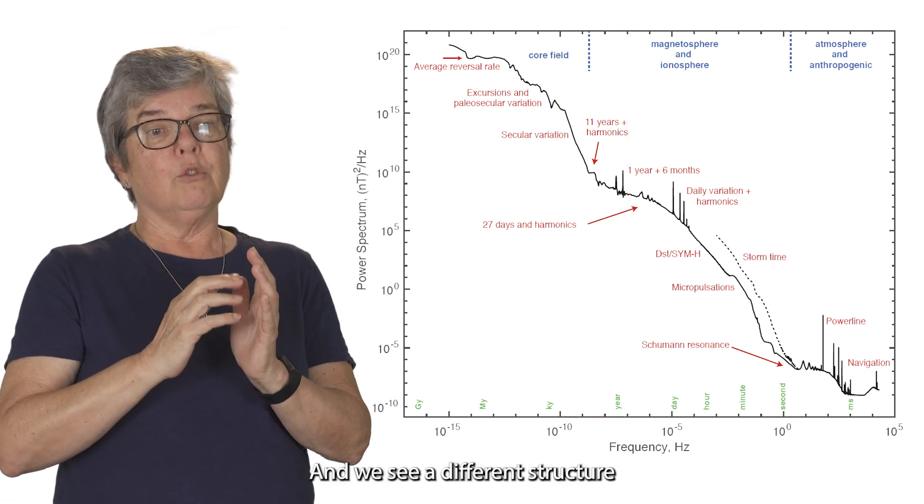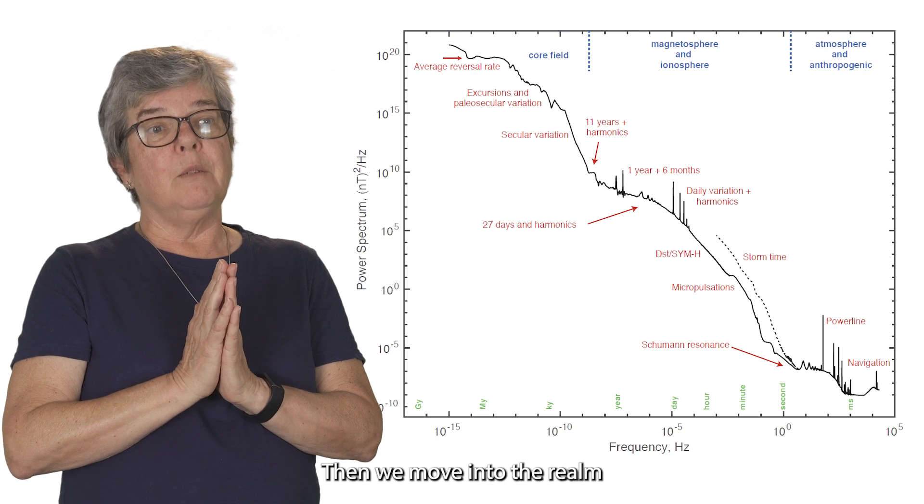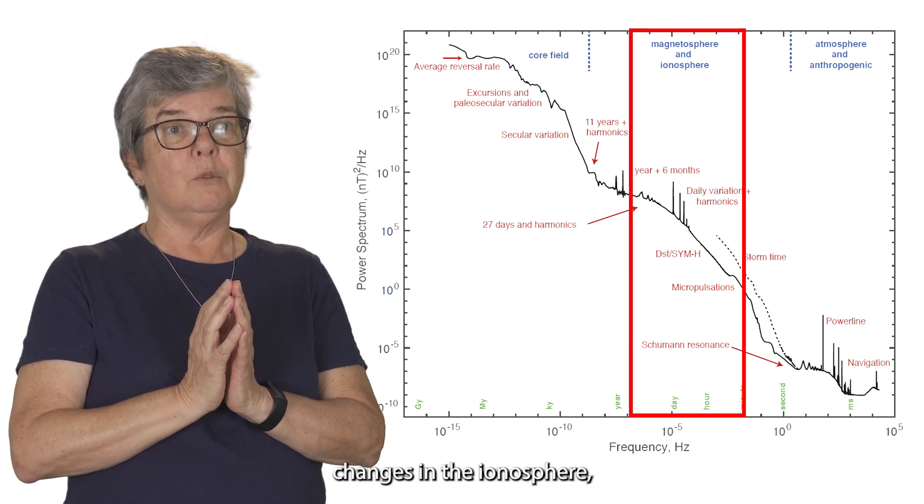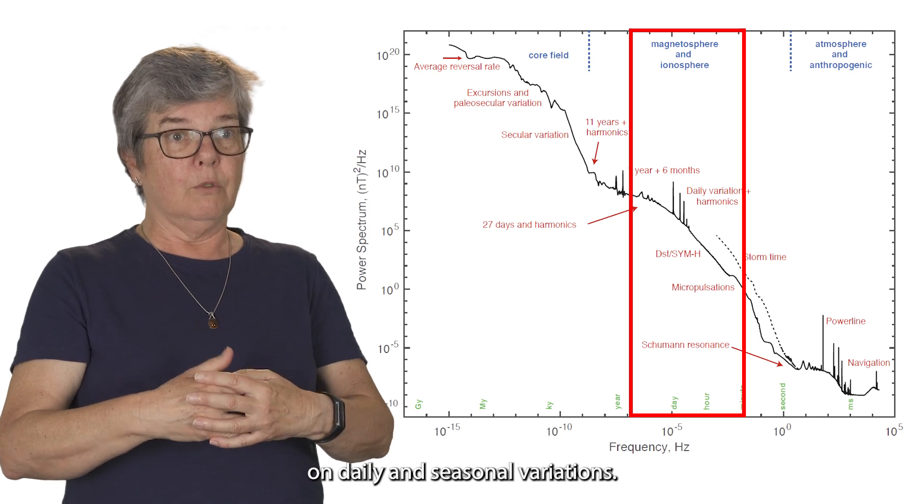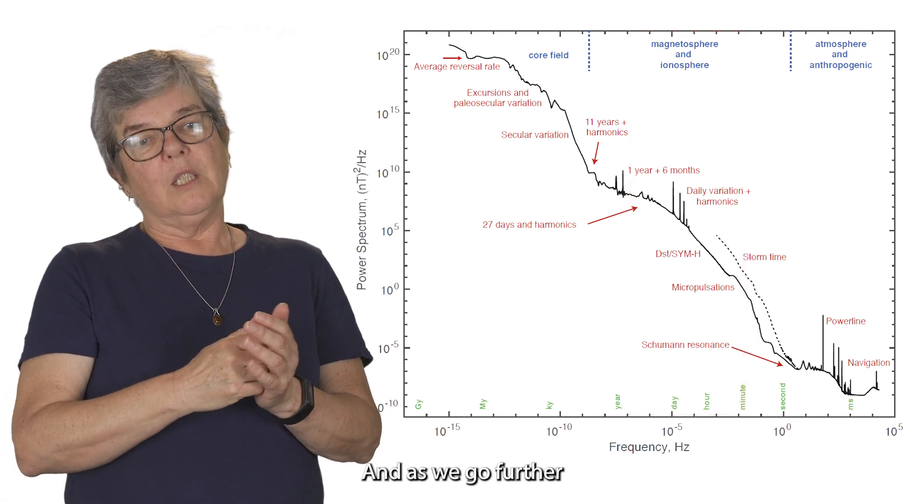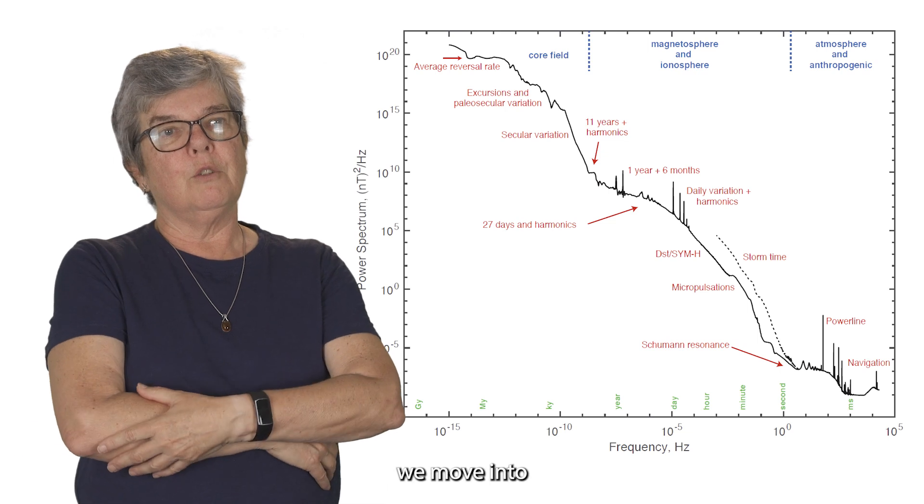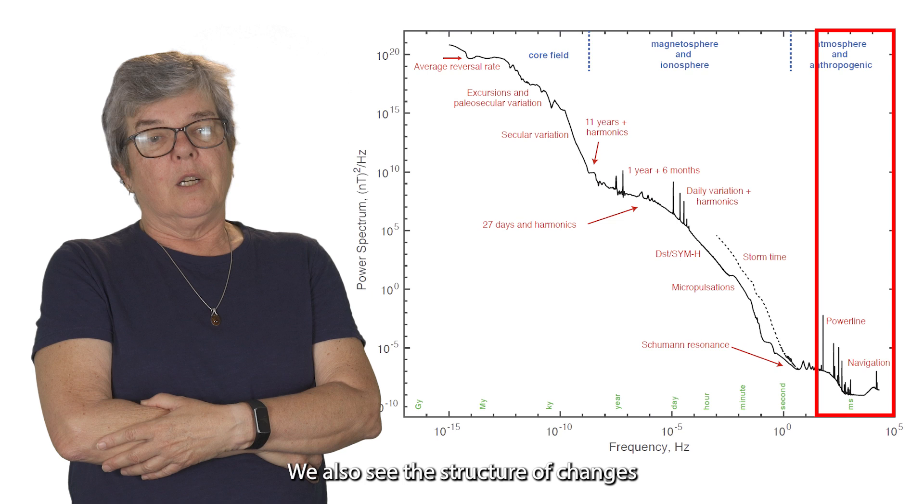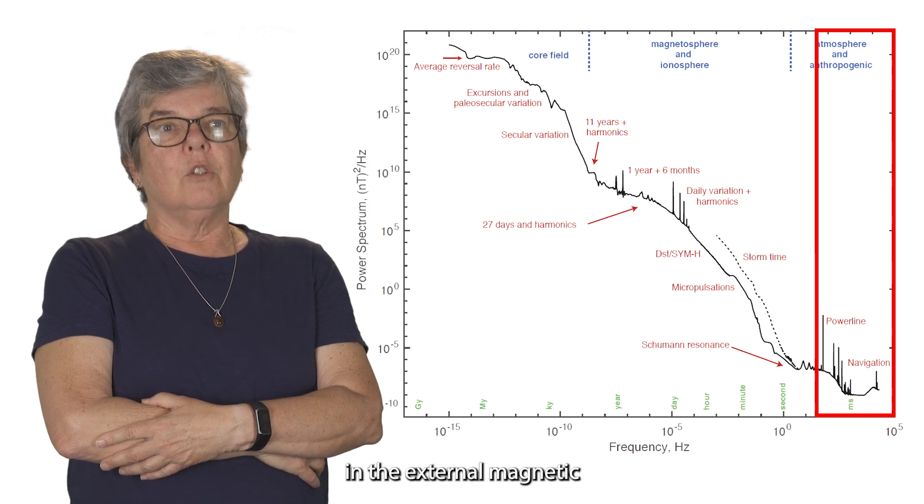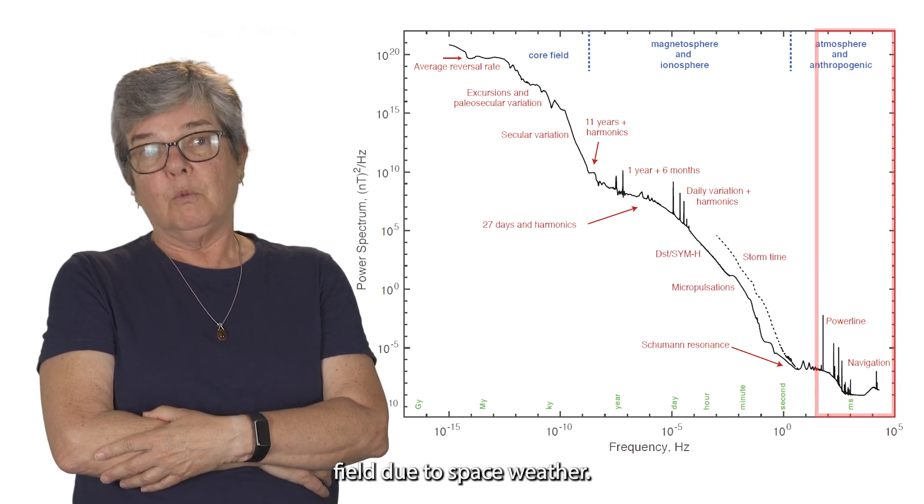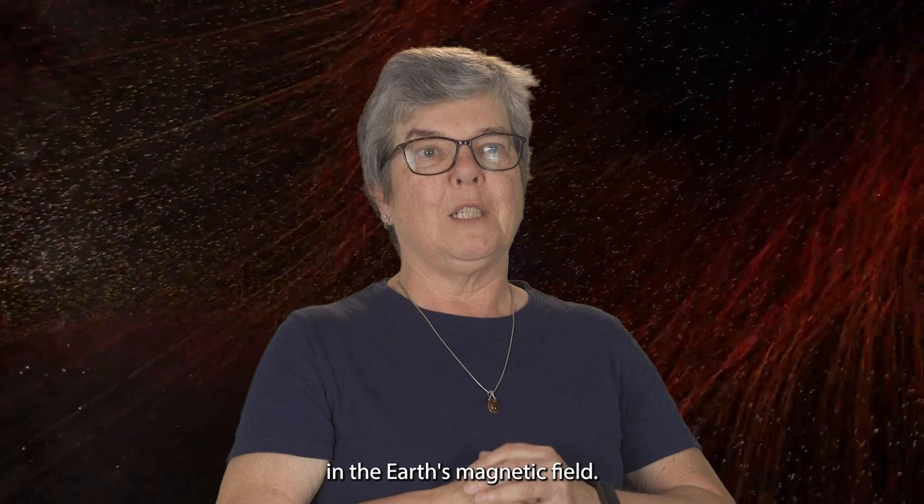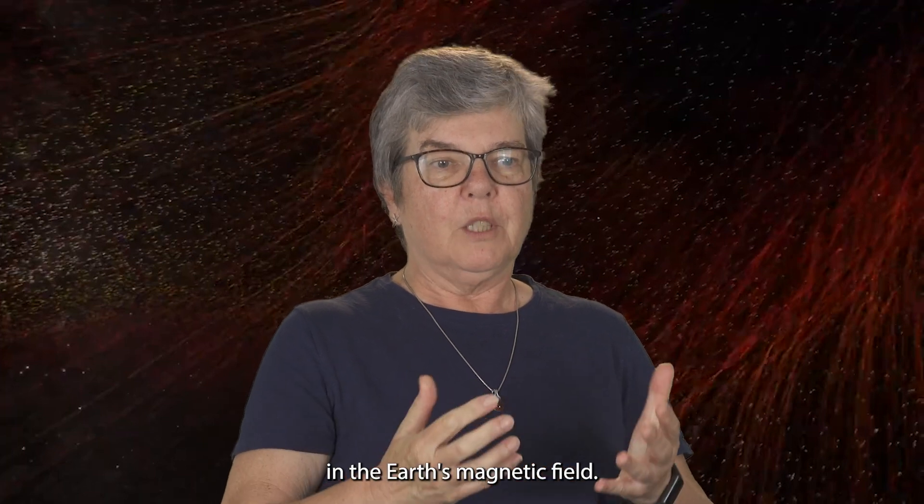And we see a different structure in the spectrum there. Then we move into the realm where we're looking at changes in the ionosphere, which happen on daily and seasonal variations. And as we go further and further up the spectrum, we move into the realm of man-made sources. We also see the structure of changes in the external magnetic field due to space weather, and that's a really important structure. We put all these together and we get a whole picture of the large-scale variations in the Earth's magnetic field. That's what the grand spectrum is.